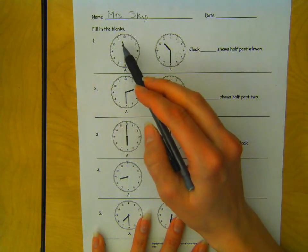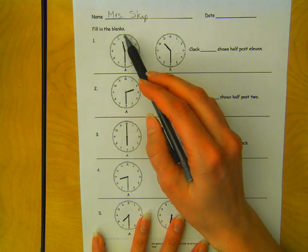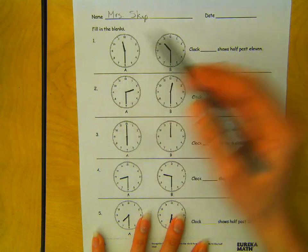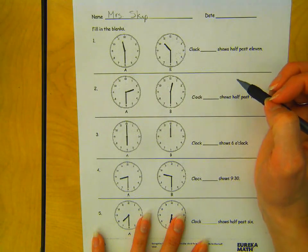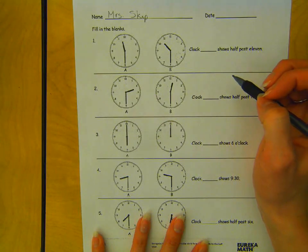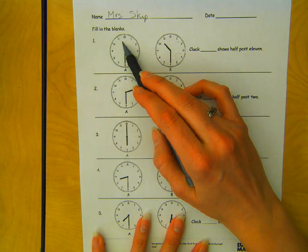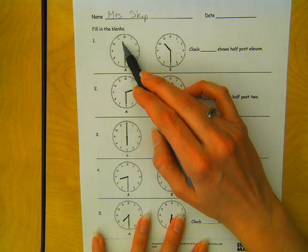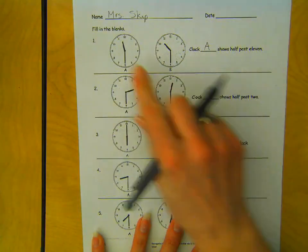So this one looks like it's halfway between 11 and 12 for the hour hand, and this hour hand is between the 10 and 11. So if we want half past 11, then we want it to be past the 11 and halfway to the next hour. So clock A is the one